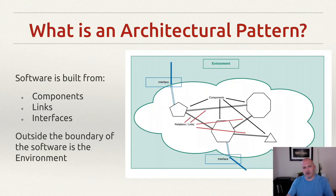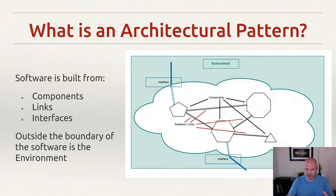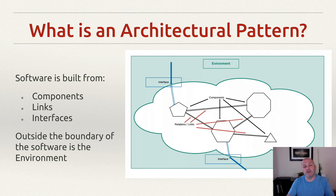We're going to start with client-server, which is the most basic. Then we're going to step up to three-tier, n-tier, and multi-layer. As part of that, we're going to talk a little bit about the differences between a tier and a layer. We're also going to discuss MVP and MVC, and we're going to wrap up with service-oriented architecture, or SOA, and microservices. In order to start, we need to understand a system in general.